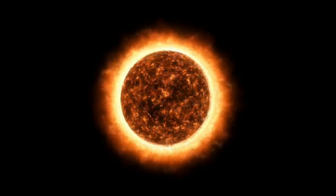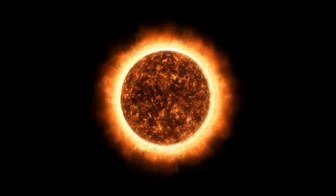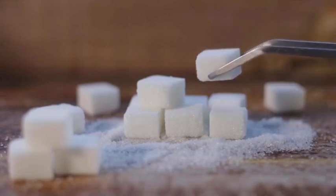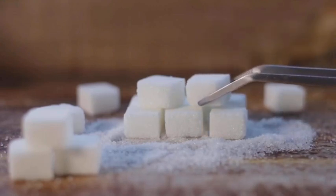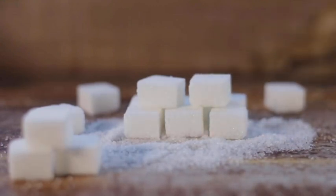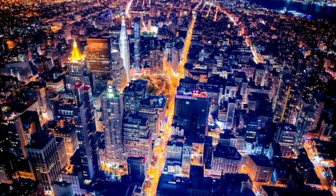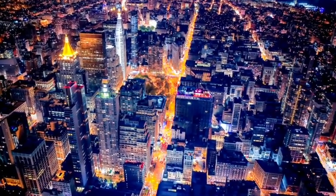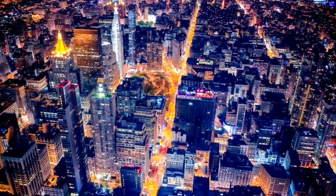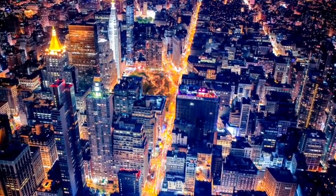According to NASA estimates, a sugar cube made of neutron star material on Earth could weigh a billion tons. The weight of such a sugar cube is equivalent to 3,000 Empire State Buildings in the United States or the entire human race.